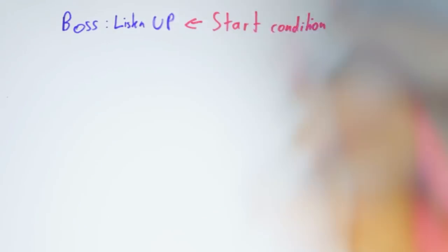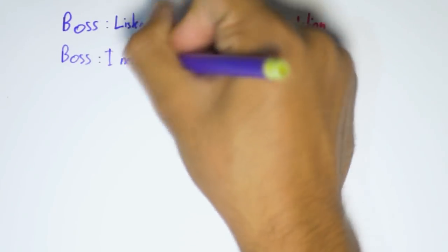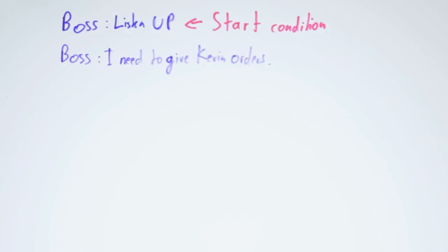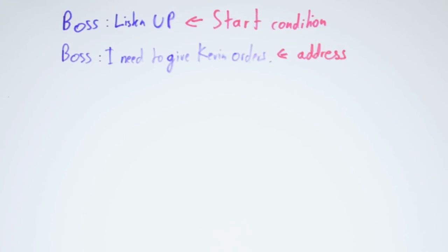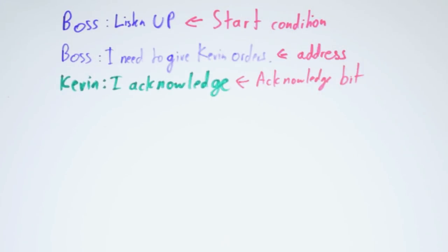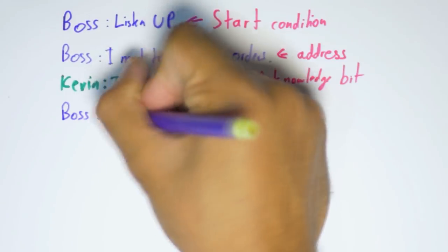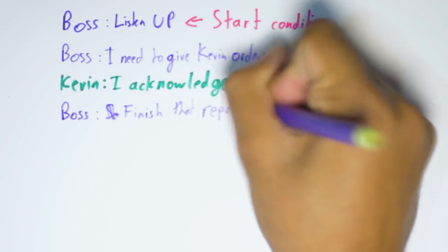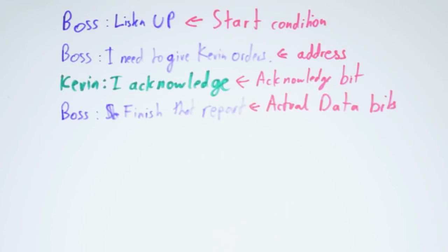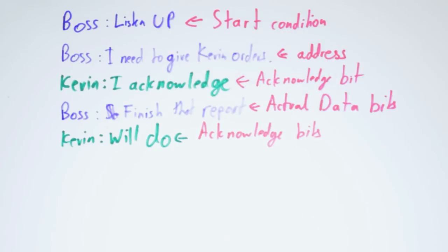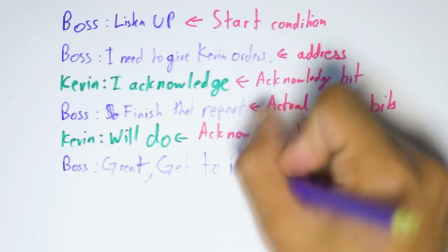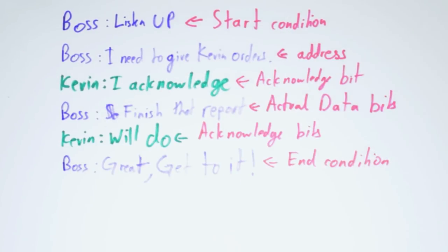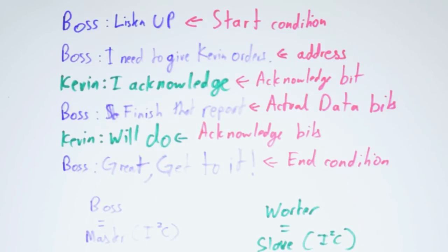Let's use a real-life example to understand how I2C works. Here we have a boss saying 'listen up' — this is like a start condition. Next the boss calls out who he needs to talk to — this is like an address frame. Then Kevin replies with an acknowledge bit. The boss then says 'finish the report' — that's the actual data being transmitted. Kevin again replies with an acknowledge bit, and lastly the boss ends the conversation with the end condition. In this I2C demo the boss is the master and Kevin is the slave.